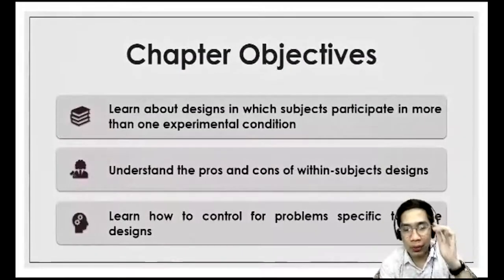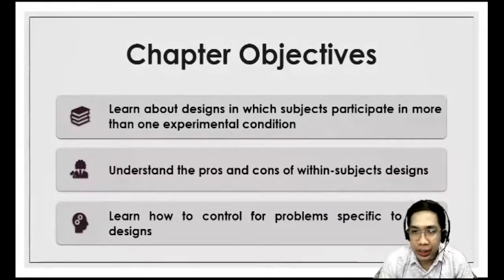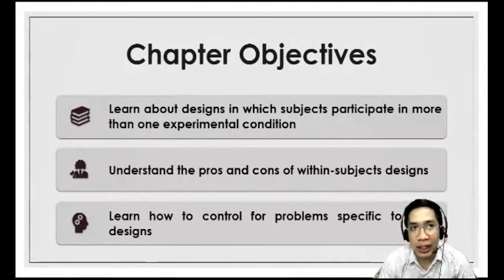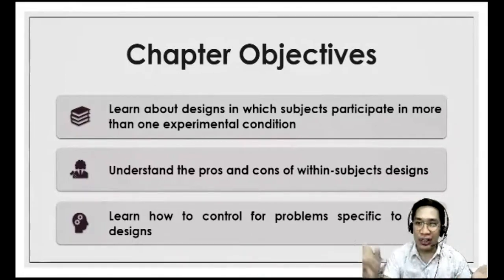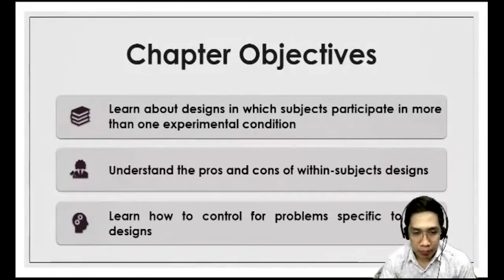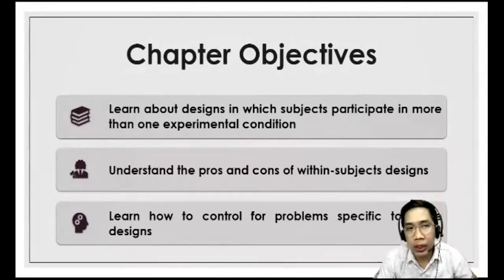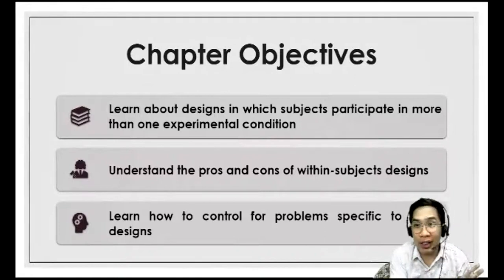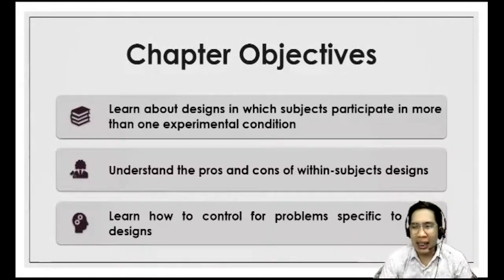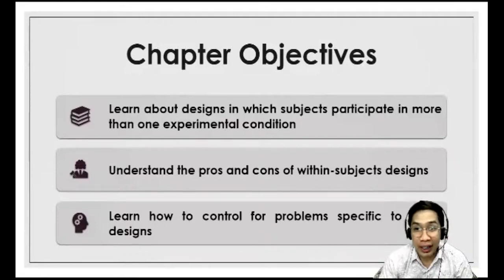The objectives for this lesson are: first, you will learn about the design in which subjects participate in more than one experimental condition — using the same subjects across all conditions. Second, you need to understand the advantages and disadvantages of the within-subjects design. Third, you will learn how to control for problems specific to this design, as there is a specific problem that needs to be addressed to avoid confounding the experiment.